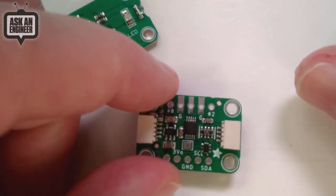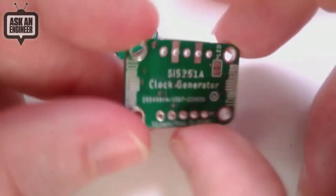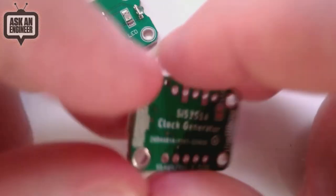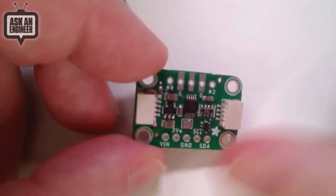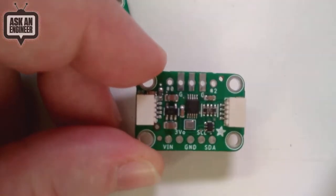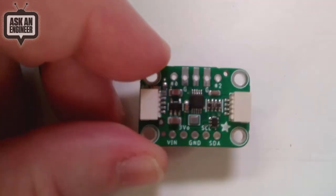And then I QTified the Si5351A clock generator. We'll still sell our breakout because it has three SMA connectors, but this chip is no longer unavailable—you can now get it.